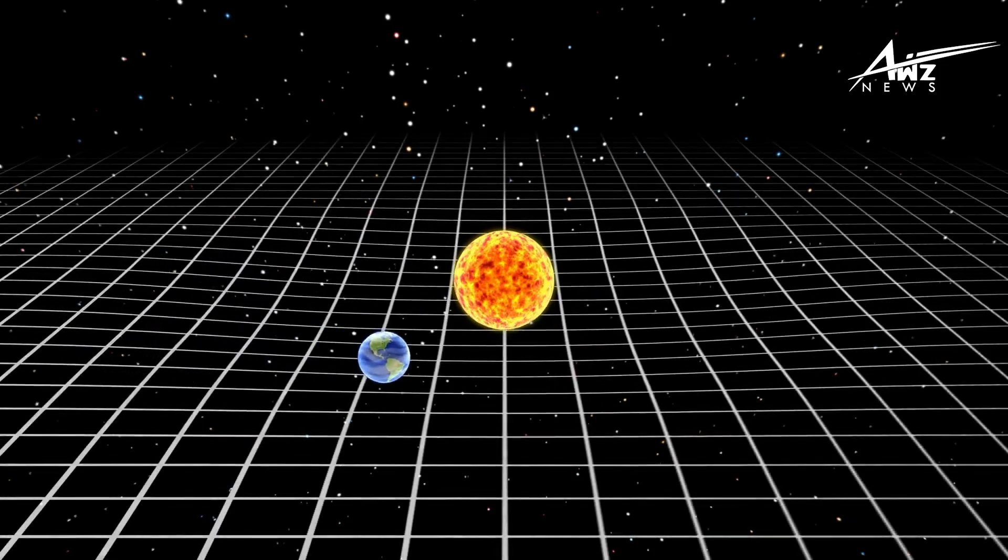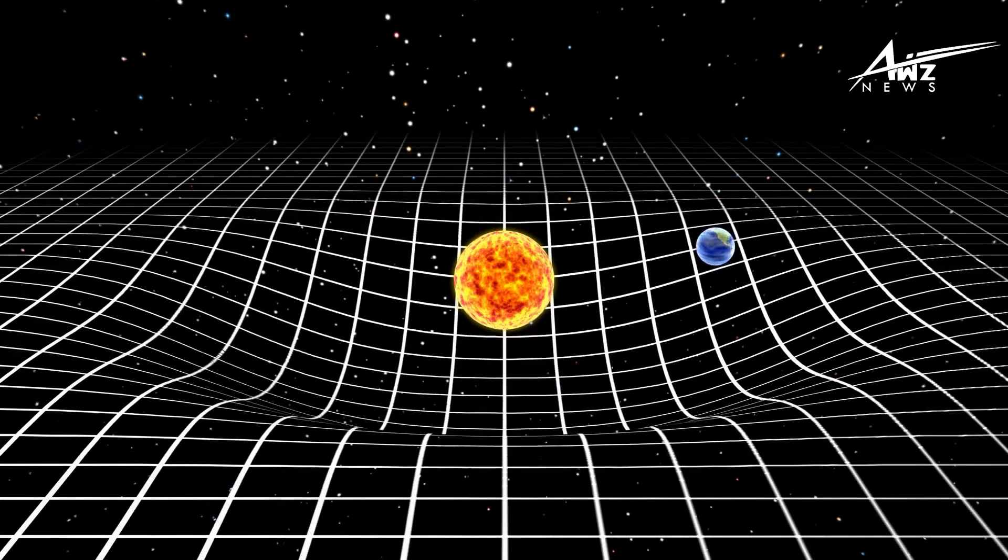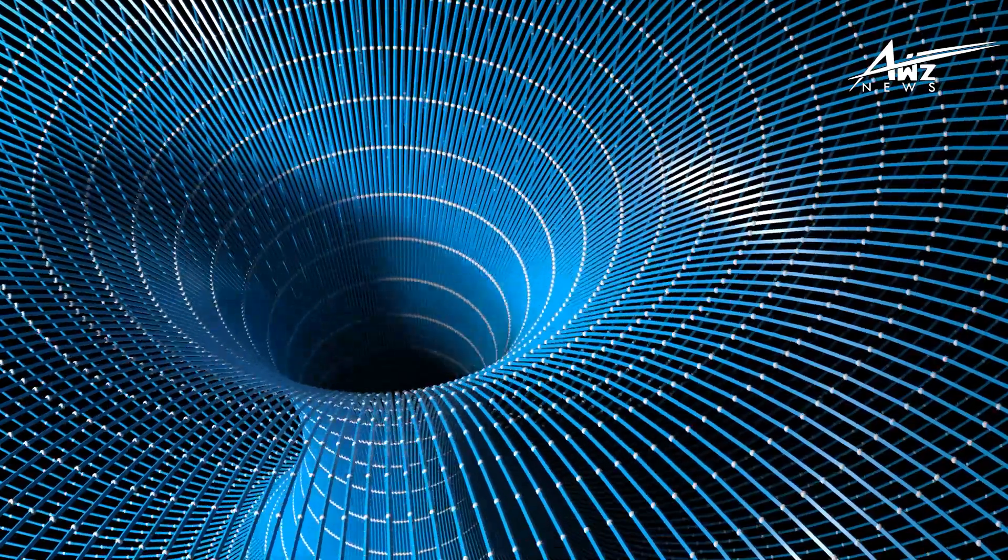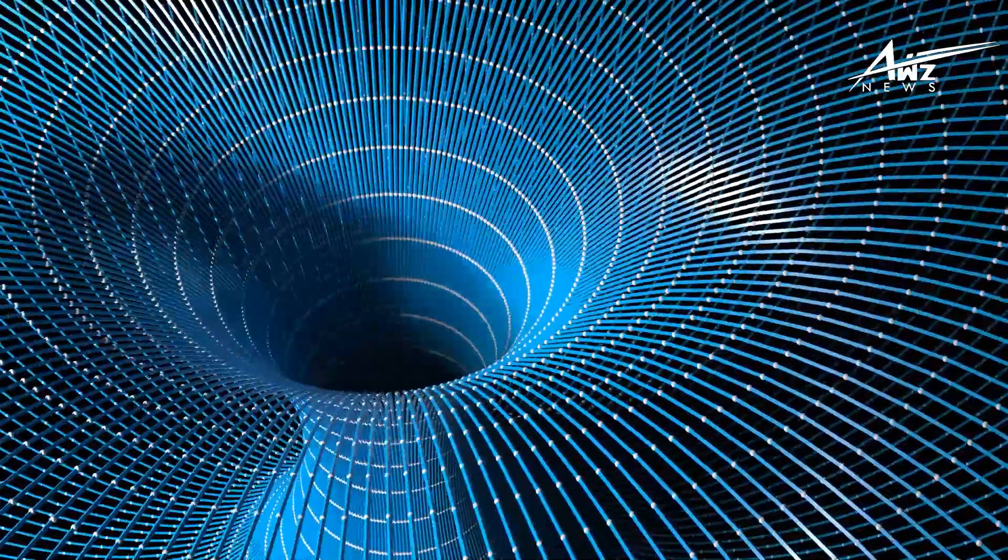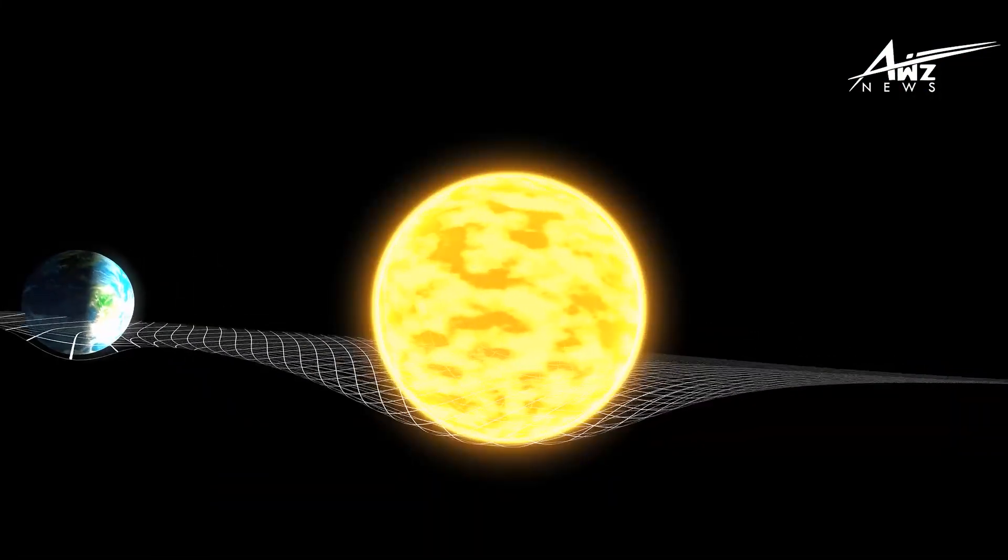We usually think of gravity as a force between objects with mass. It's easy to see how this force works by stepping on a scale to see how much you weigh. The number on the scale represents the Earth's gravity on your mass, or your weight on planet Earth.